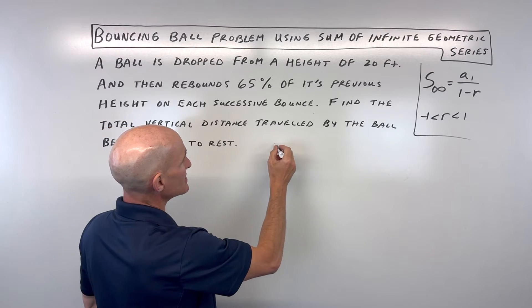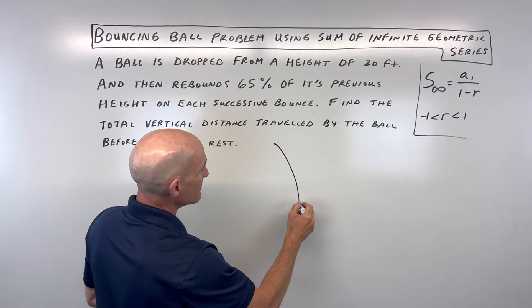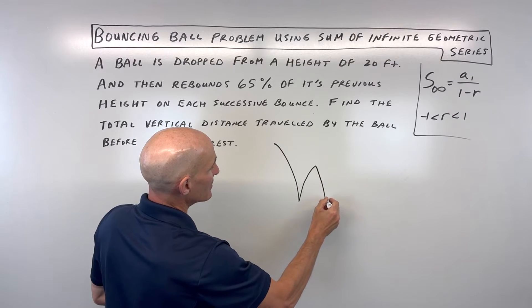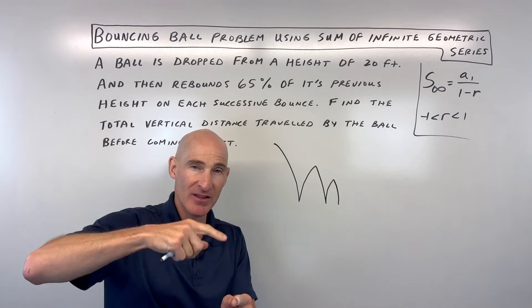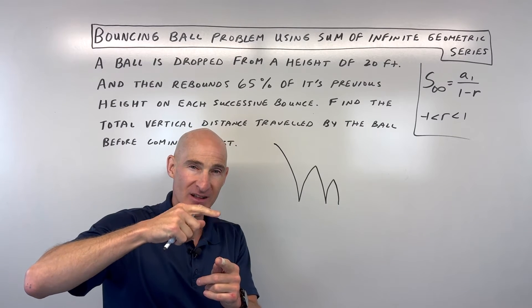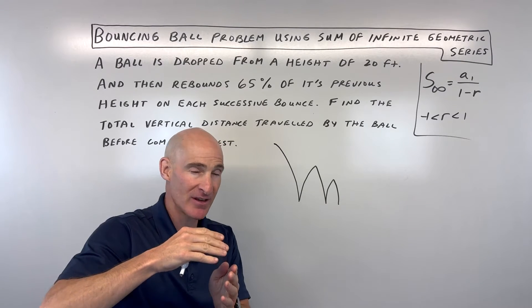You can almost kind of visualize this like this: it drops, then it comes up, then it goes down, then it comes up, then it goes down. It's just bouncing up and down, but it gradually is less and less high each time until it eventually settles.